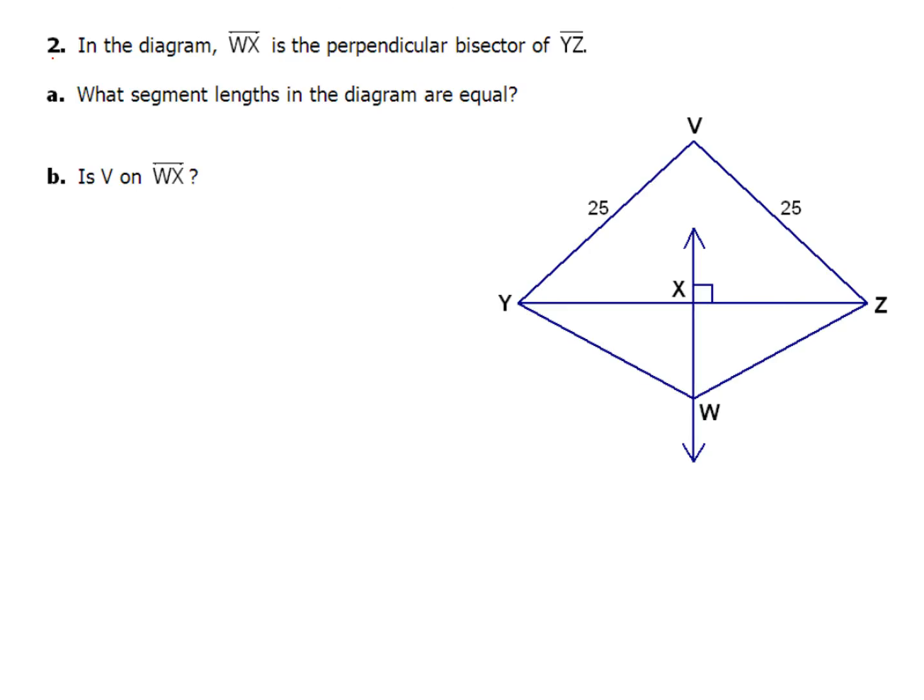Now let's take a look at our next one. In the diagram, WX is the perpendicular bisector of YZ, segment YZ. Our question is, we've got two of them. What segment lengths in the diagram are equal? And our second question is V on WX. Here in our directions, we're told that WX is the perpendicular bisector. So I want you to go ahead and mark up the diagram. So this piece right here, this WX, that's going to perpendicular bisect YZ. In the right angle, we can already see here. But what's not marked is this piece right here and this piece right here. So for the first part, what segments in the diagram are equal? Well, because it's a perpendicular bisector, the XY part, that is going to be equal to the XZ part. Both of those pieces are going to be equal.